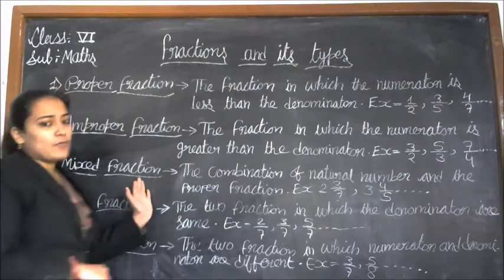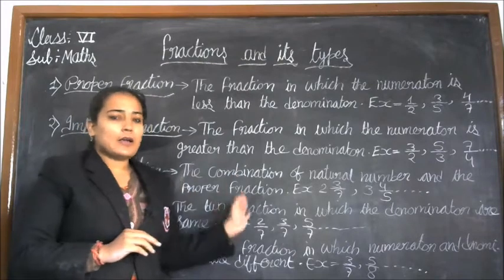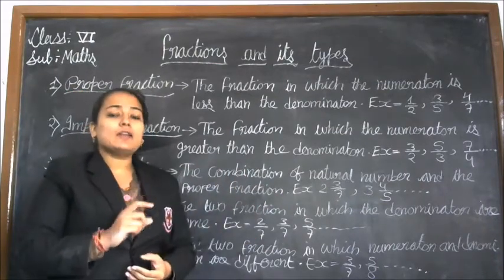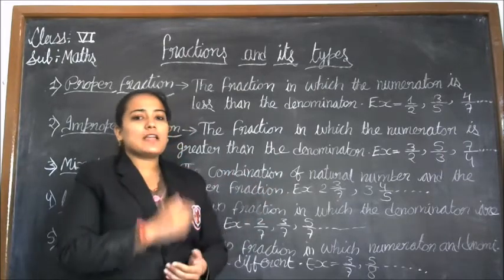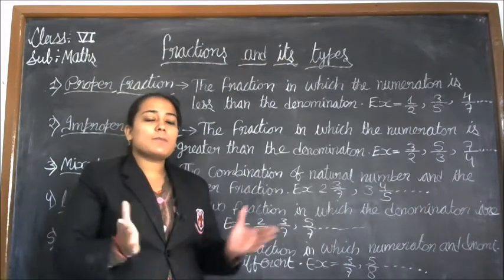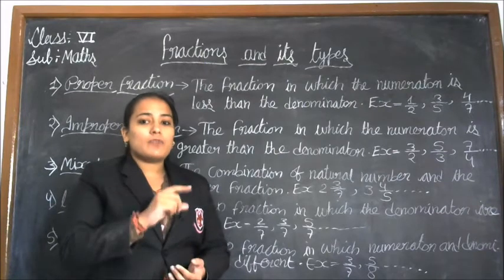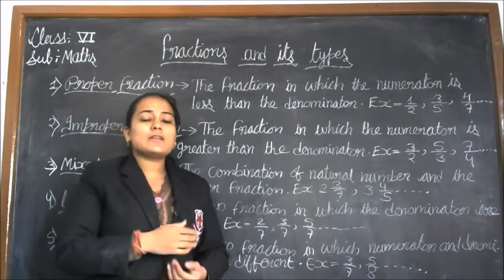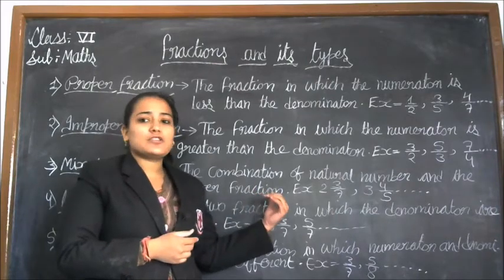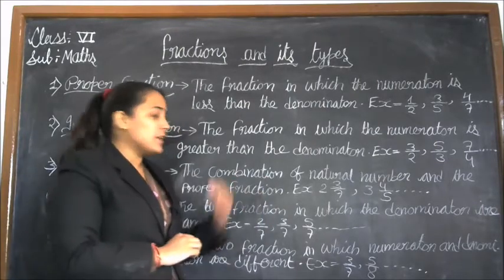The third one is mixed fraction. A mixed fraction is the combination of a natural number and a proper fraction together. When we combine a proper fraction and a natural number together, it is known as a mixed fraction. Natural numbers are counting numbers that start from 1: 1, 2, 3, 4, 5, 6, and so on.